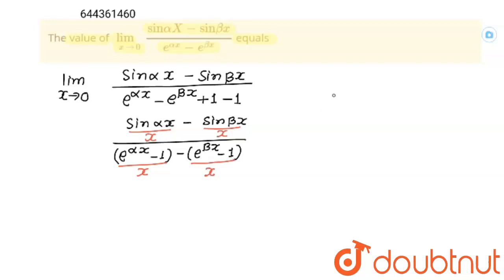Now step one formula: limit x tends to 0, sin x upon x equals 1, which means that if both terms are the same and at this limit both tend to 0, then value is 1. Here this is alpha x, this is x. There is no alpha.